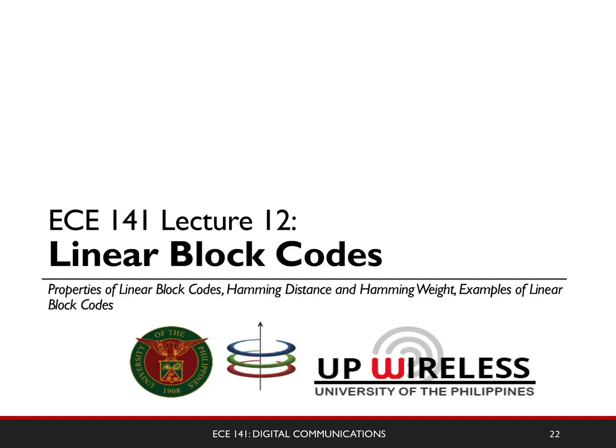Welcome to part 2 of lecture 12, ECE 141. We are still talking about linear block codes. In this part of the lecture, I'll be introducing some examples of linear block codes — some may be familiar to you if you use your computer a lot. Just a review from the previous part: the main takeaway is that when using linear block codes, you have minimum Hamming distance, and if we increase that, you increase the reliability of your code.